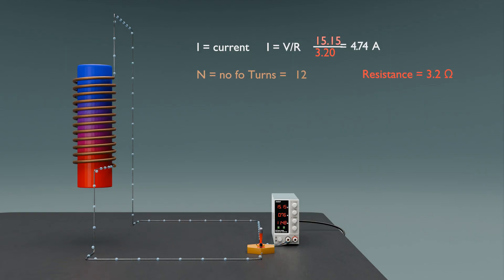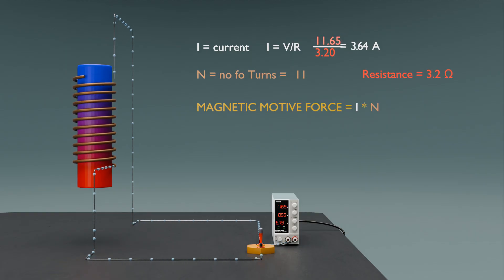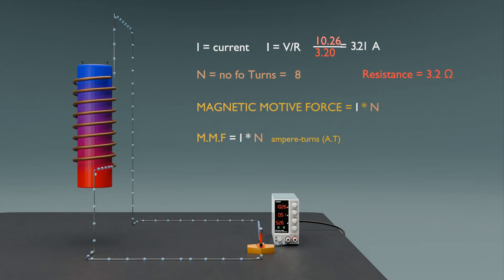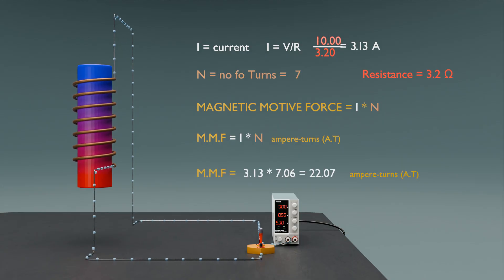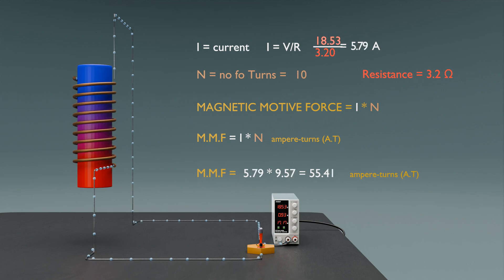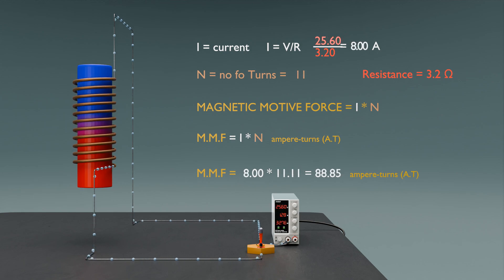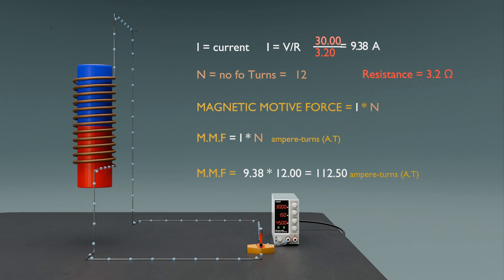The number of turns N refers to how many times the wire is wound around the core of the inductor. MMF is responsible for creating the magnetic flux within the inductor, illustrating how the number of coil turns and the current together determine the strength of the magnetic field.